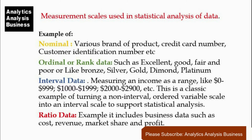More interval data examples: 4. Test scores such as the SAT and ACT. 5. Age is also measurable on an interval scale — 1, 2, 3, 4, 5 years, etc. 6. Measuring income as a range, like $0–$999, $1,000–$1,999, $2,000–$2,999, etc. This is a classic example of turning an ordered variable into an interval scale to support statistical analysis. 7. Dates such as 1015, 1442, 1726, etc. 8. Voltage, for example 110 and 120 volts AC, 220 and 240 volts AC. 9. In marketing research, if we ask two people how much time they spend reading a magazine each day, we would know not only who spends more time but also the exact difference in minutes between the two individuals. 10. Grade levels in a school — first grader, second grader, etc.